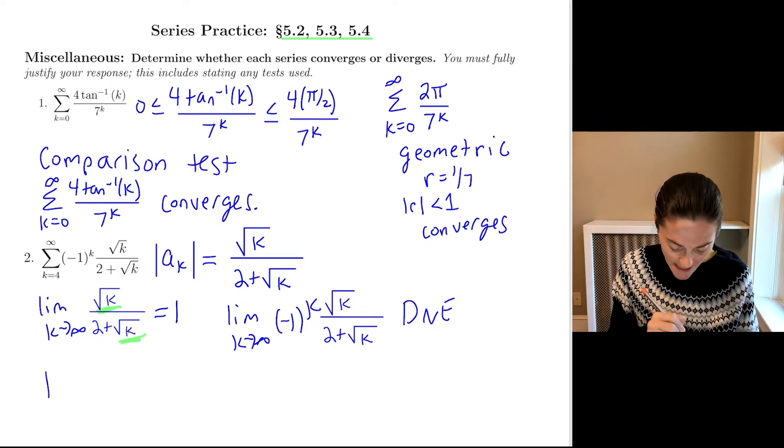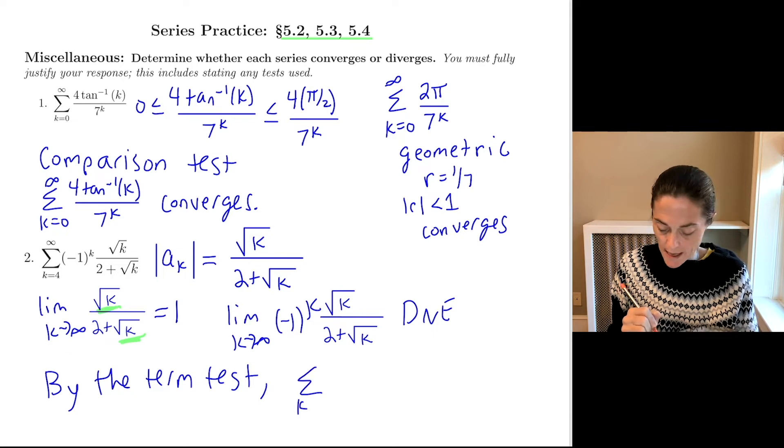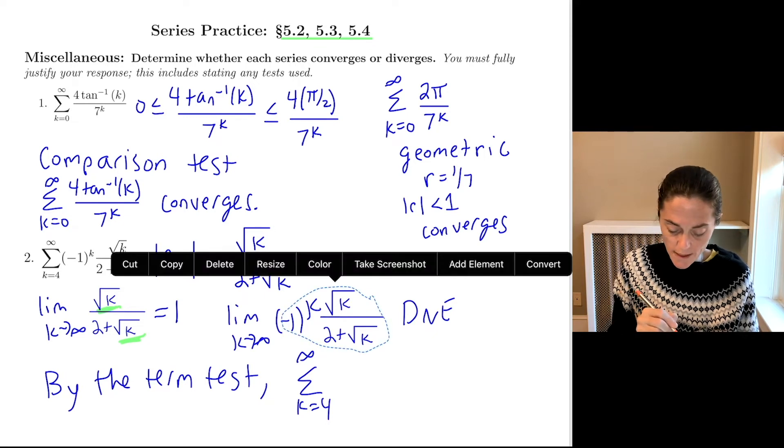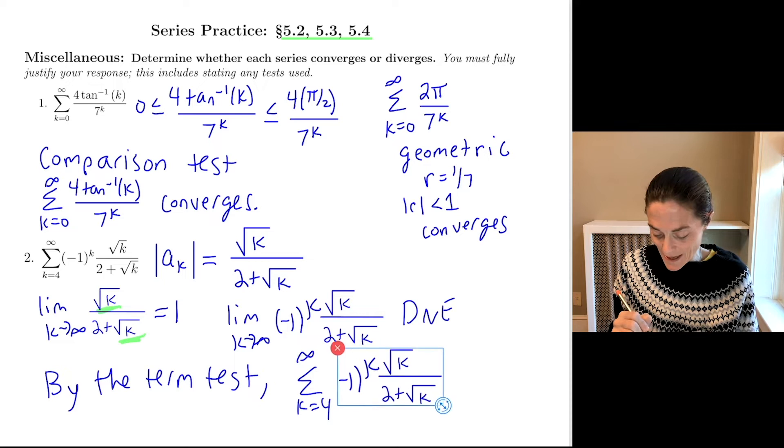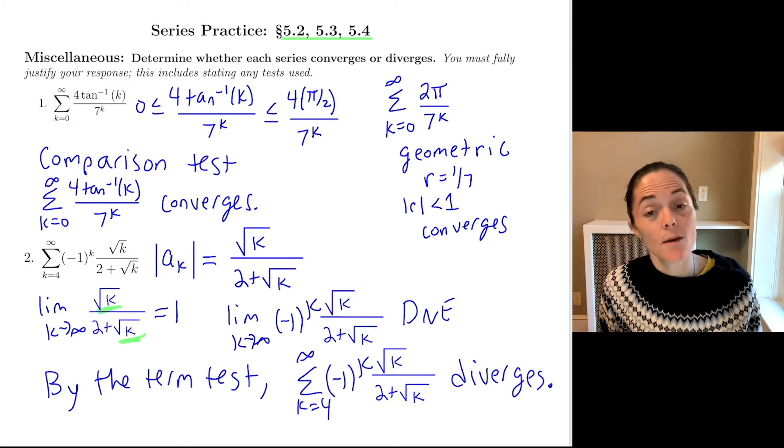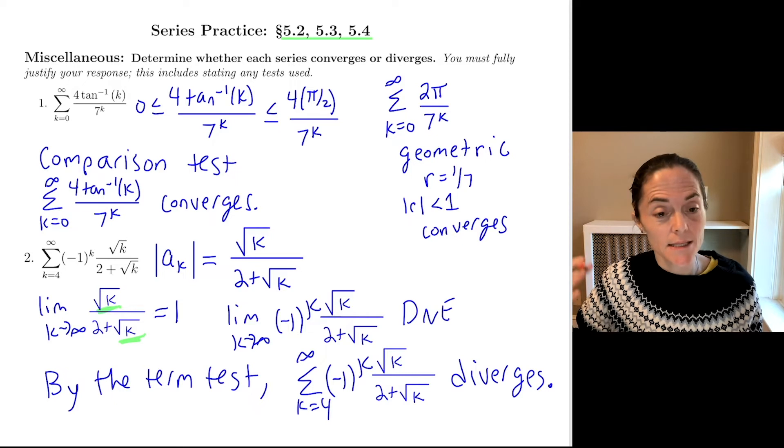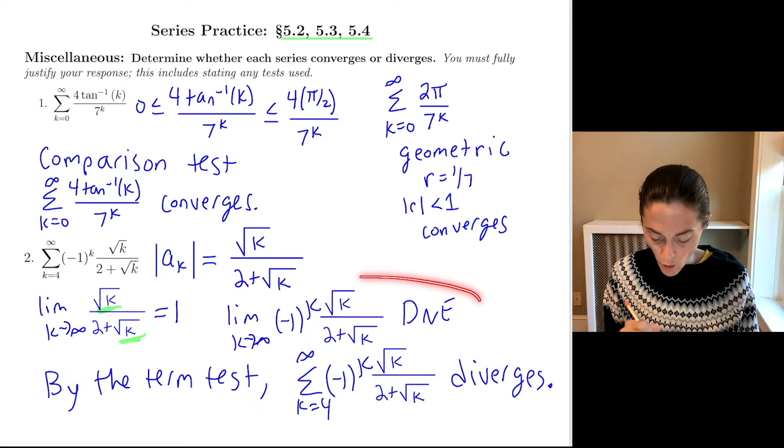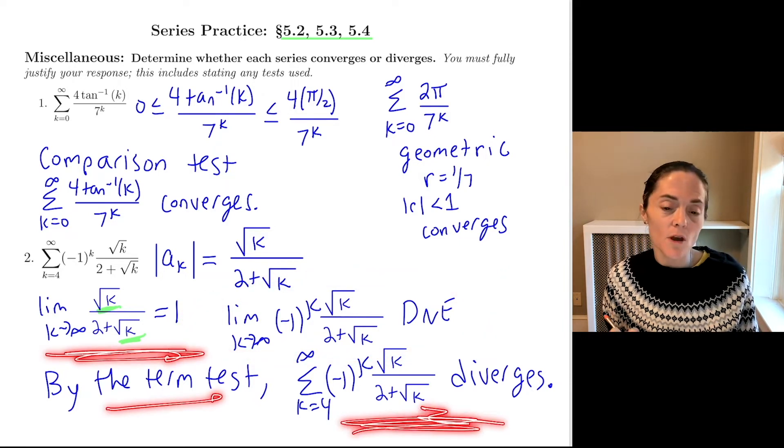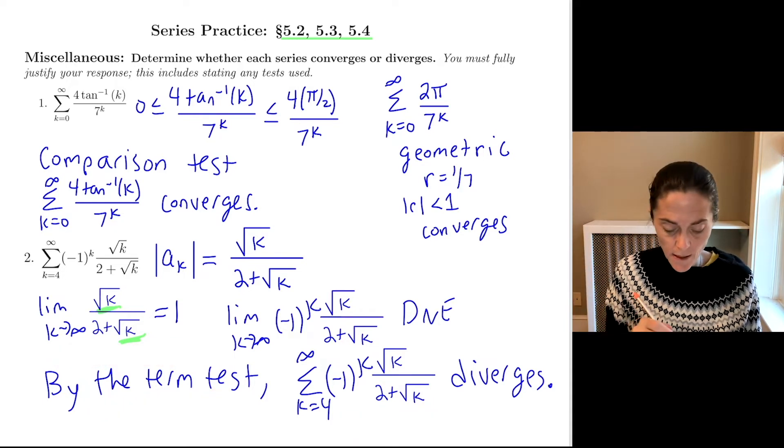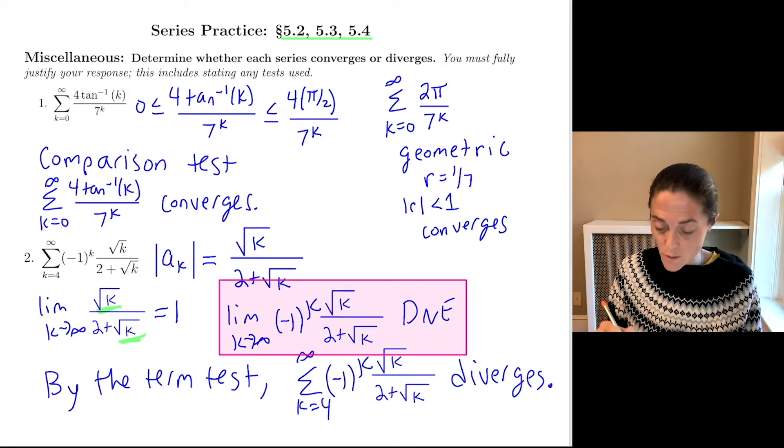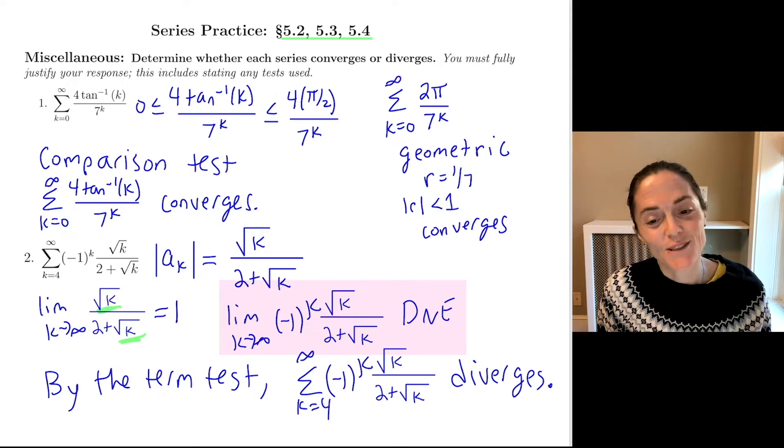What that says is my actual terms, this is where I need to use a term test. My actual terms, which is minus 1 to the k times this, square root of k divided by 2 plus square root of k, this limit does not exist. It will oscillate between close to 1 and minus 1 for k very large. So we quote the term test. My series k equals 4 to infinity of these terms, minus 1 to the k, square root of k divided by 2 plus square root of k, diverges. The biggest mistake I see when it's an alternating series and you use term tests to conclude diverges is that people don't do the limit of the actual terms. I see students do this part and then they quote the term test and say something about the overall series. But for the term test, without a doubt, we need this. We need the limit of the actual terms as part of our work. And so this is fundamental to this problem.